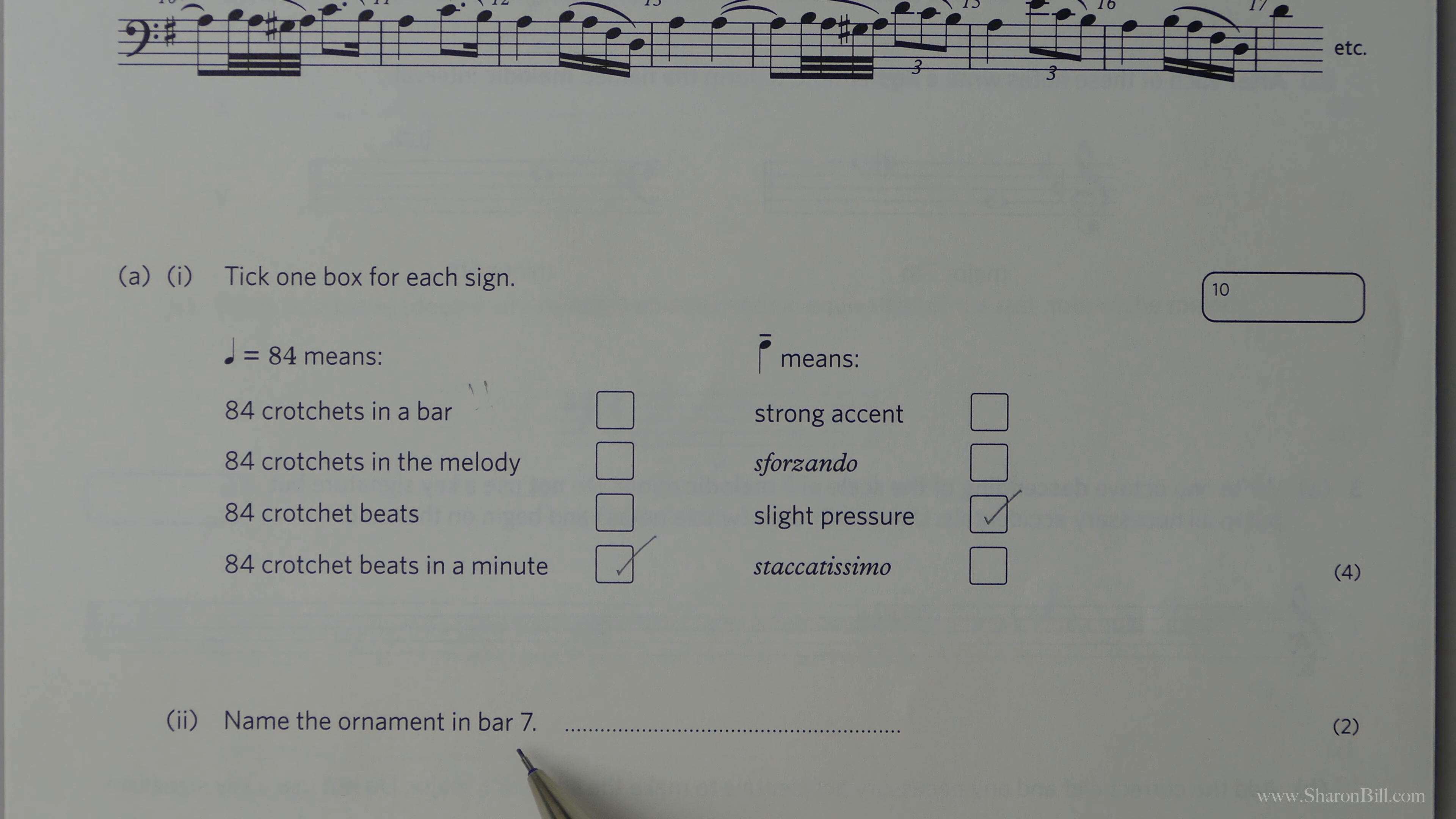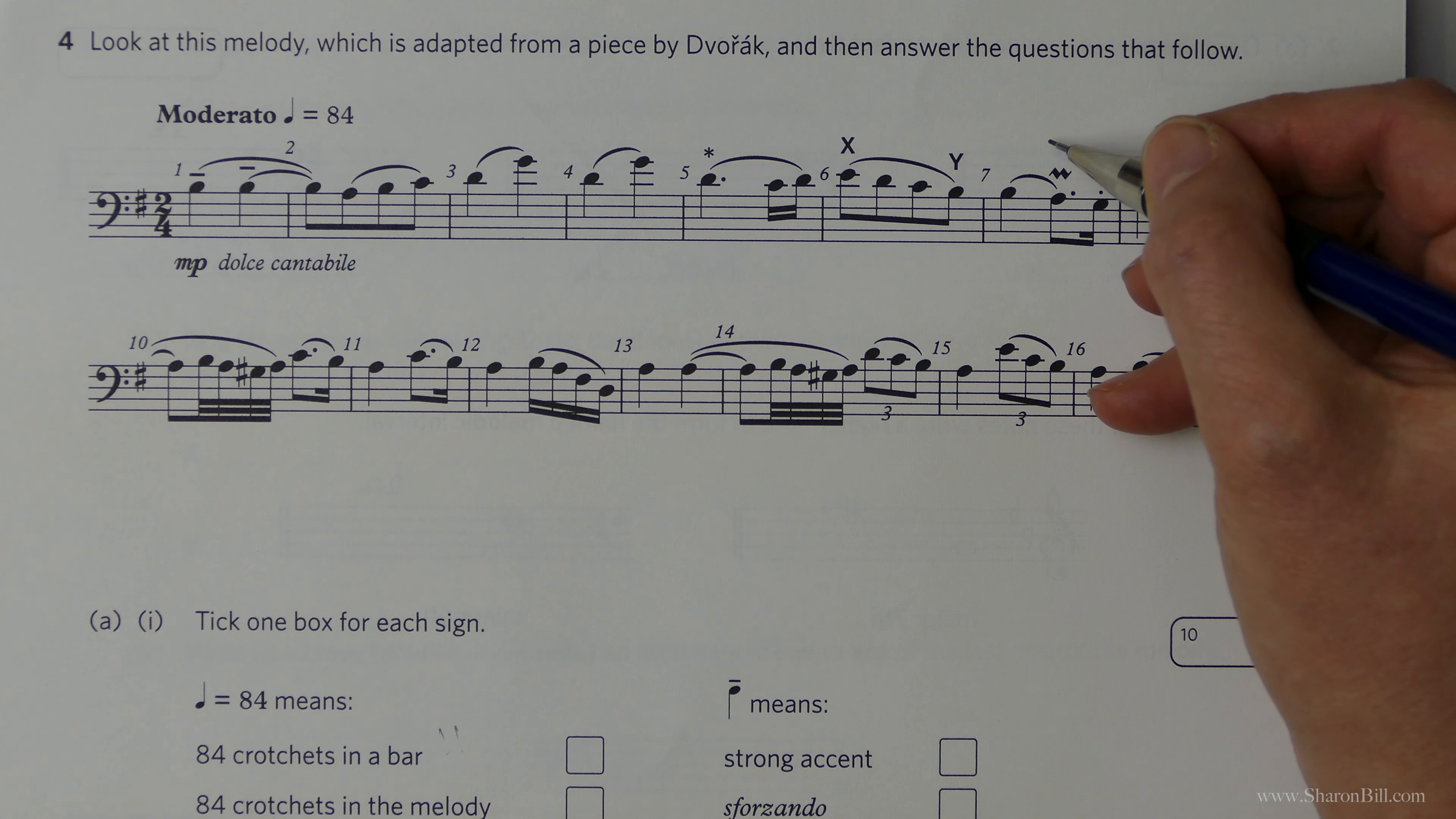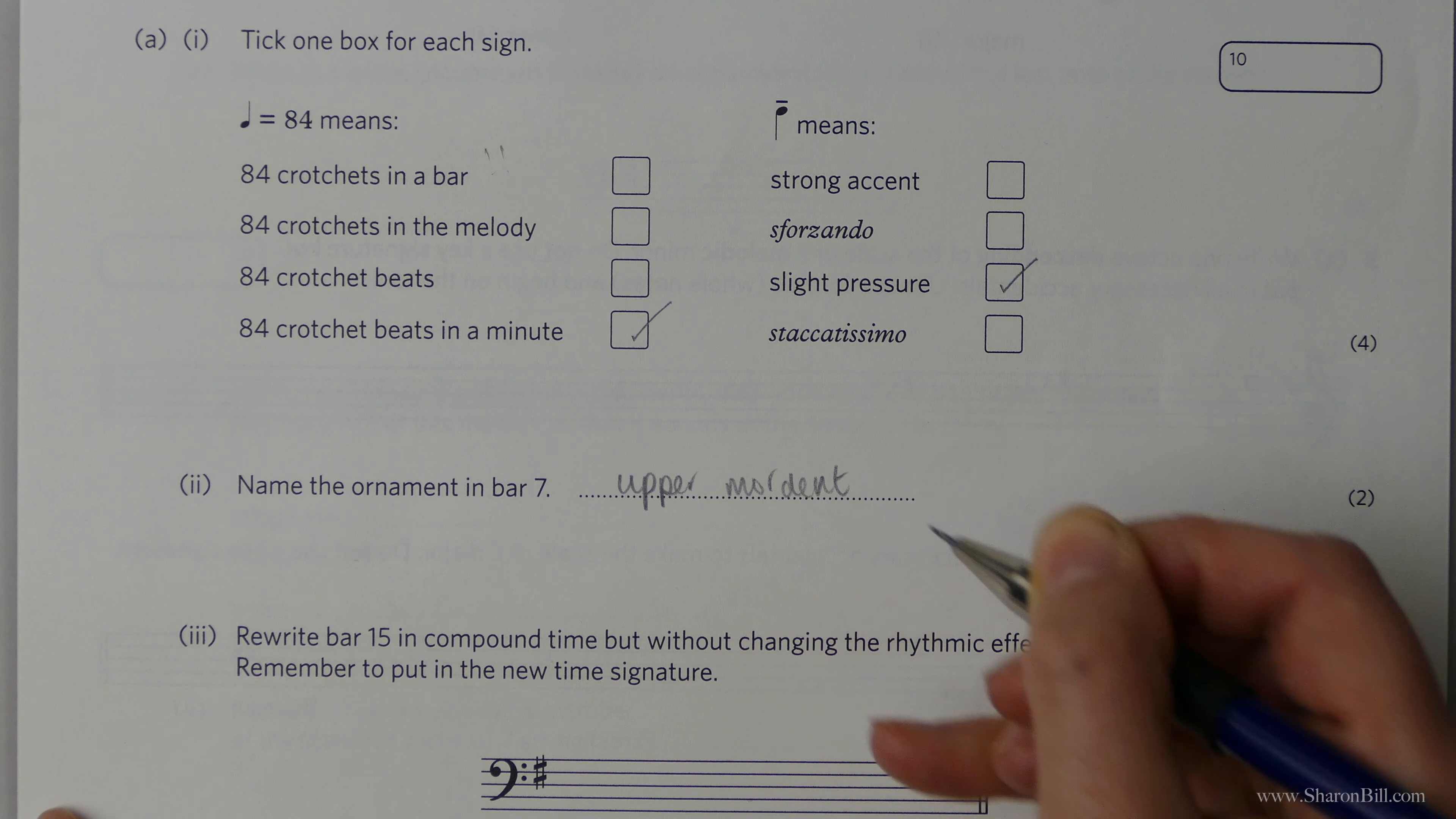Now, what's the ornament in bar 7? Let's have a look. So we have a mordant sign here. More specifically, it's an upper mordant. Remember, the lower mordant would have a line through it. So it's an upper mordant.